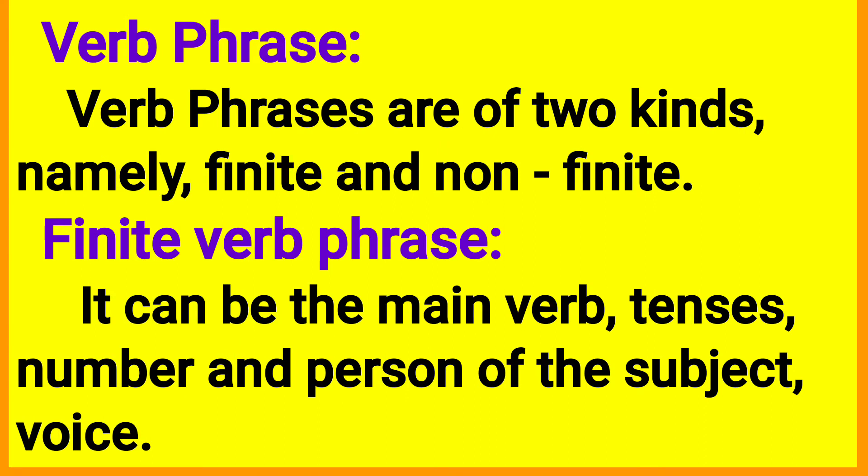Verb phrases are of two kinds, namely finite and non-finite. A finite verb phrase can be the main verb and shows tense, number, and person of the subject, and voice — active and passive. The finite verb phrase carries tense, subject, number, person, and active or passive voice.